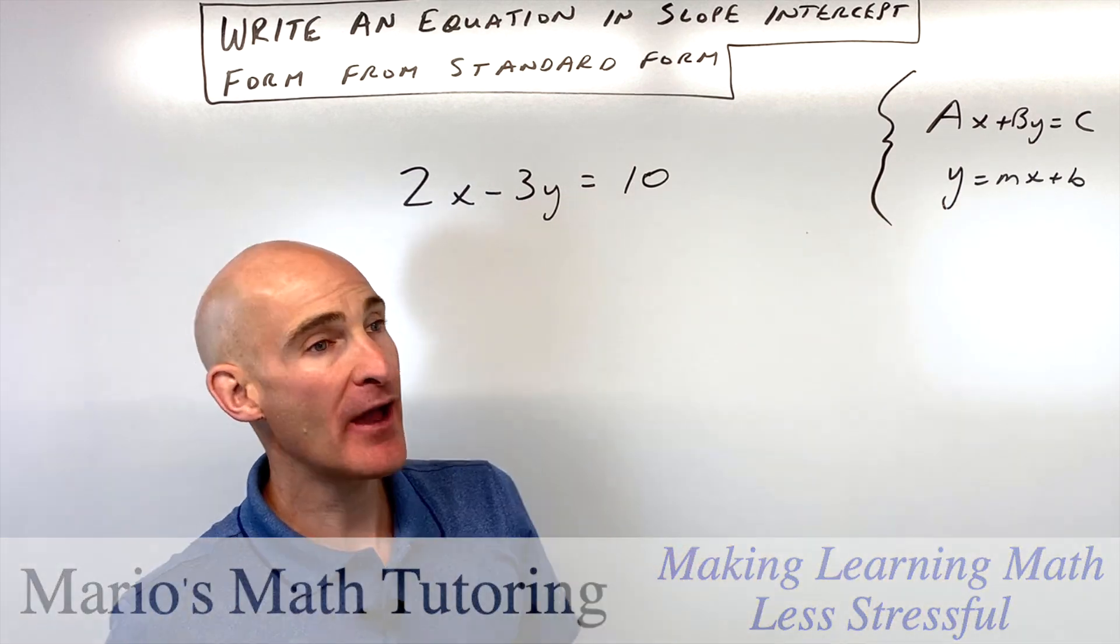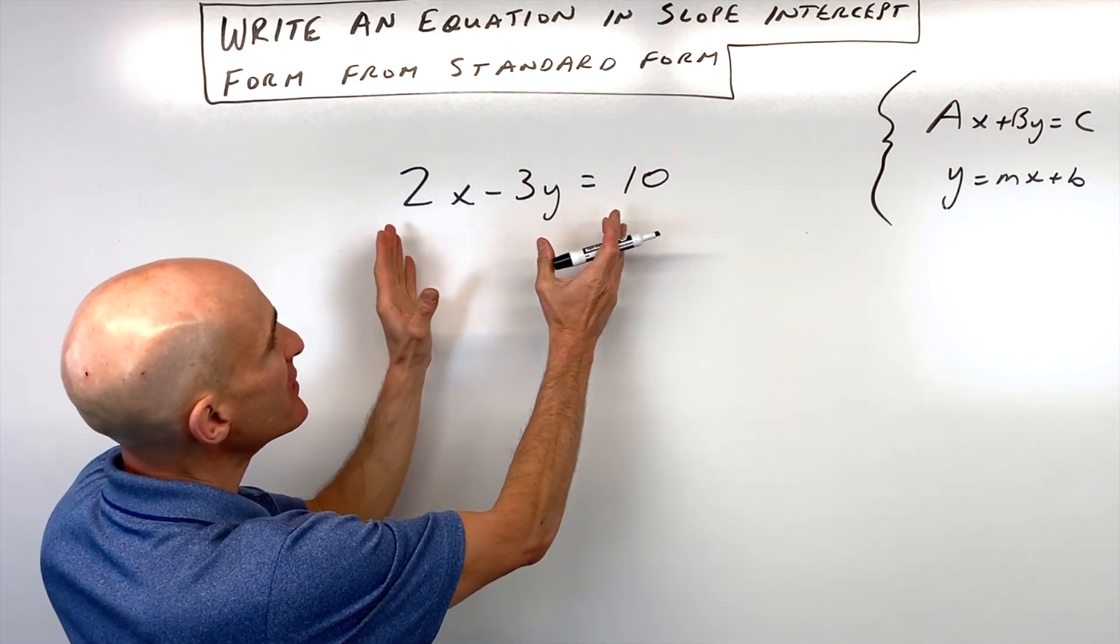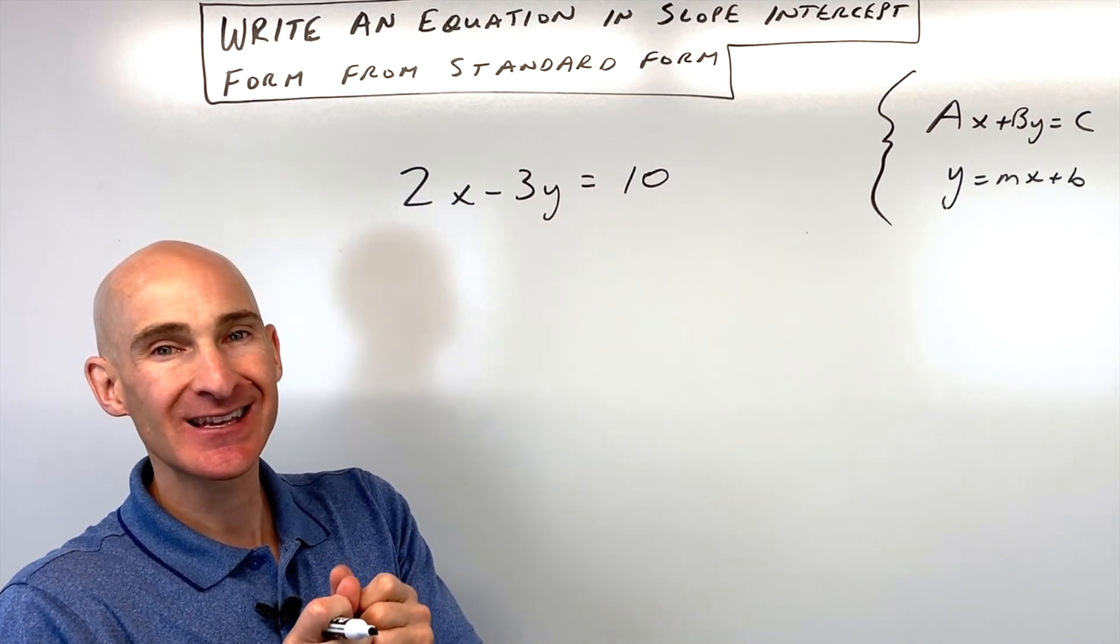So in order to do that, we need to get that y value by itself on one side of the equation. The way we're going to do that is we're going to think about working from the outside in towards that y value to isolate it, to get it by itself.